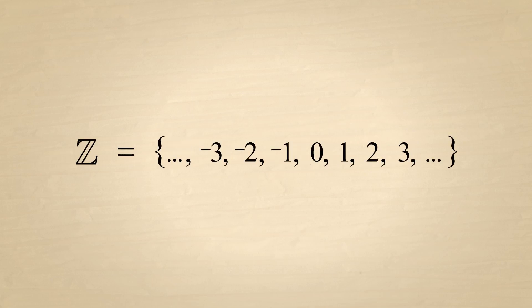Likewise, the set of integers can be written with an ellipsis on either side to indicate that the numbers go on forever in both the positive and negative directions. Fewer or more elements can be listed as long as the pattern is clear.